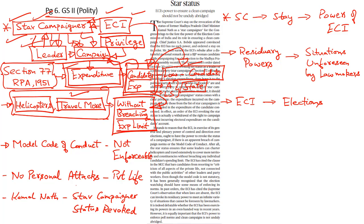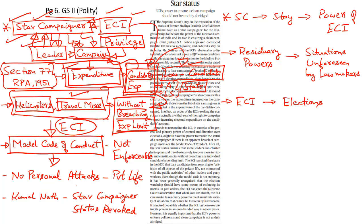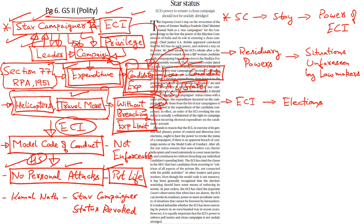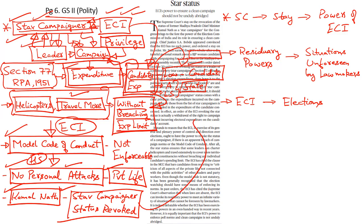Those political leaders who have been designated as star campaigners need to strictly abide by the model code of conduct laid down by the Election Commission of India. The model code clearly states that while campaigning, star campaigners cannot resort to hate speech, they cannot carry out personal attacks against opposition parties, especially with regard to their private life. This topic is recently in news because Congress leader Kamal Nath recently made a controversial statement against a woman candidate of the opposition party, and since this was a breach of the model code of conduct, the Election Commission of India decided to revoke the star campaigner status of Mr. Kamal Nath.